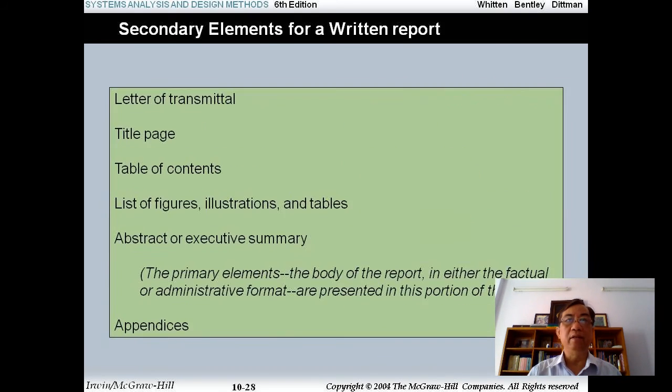Secondary elements for a written report: the first one is a letter or memo of transmittal, title page, table of contents, list of figures, illustrations and tables, abstract or executive summary. The primary elements, the body of the report in either the factual or administrative format, are presented in this portion of the report and appendices.